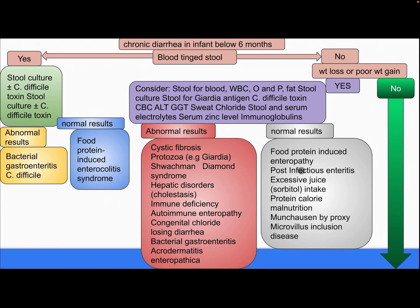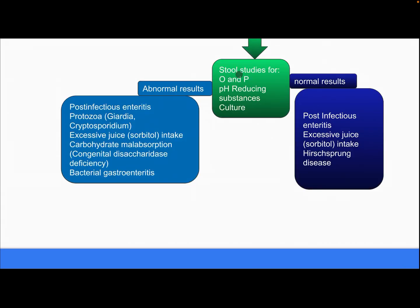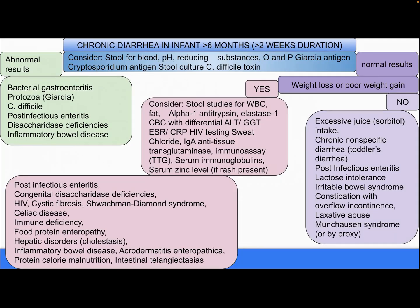If results are normal, differential diagnosis includes food protein-induced enteropathy, post-infectious enteritis, excessive juice intake/sorbitol, protein-calorie malnutrition, Munchausen by proxy, and microvillus inclusion disease. If there is no weight loss, perform stool studies for ova and parasites, pH, reducing substances, and stool culture. If normal, differential diagnosis includes post-infectious enteritis, protozoa (Giardia, Cryptosporidium), excessive juice intake/sorbitol, carbohydrate malabsorption, congenital disaccharidase deficiency, bacterial gastroenteritis, post-infectious enteritis, excessive juice intake, or Hirschsprung's disease.